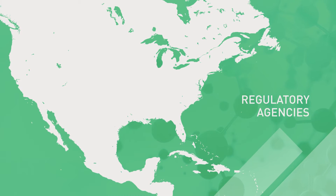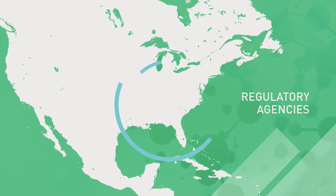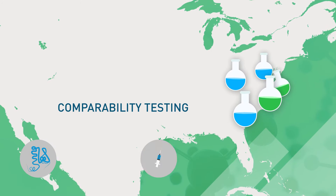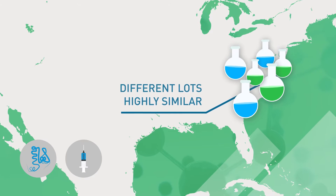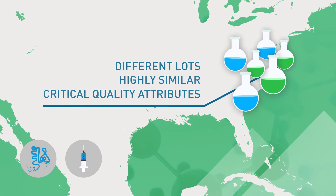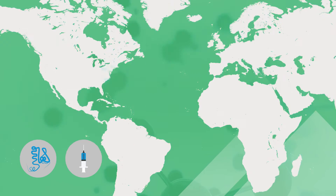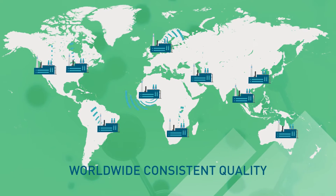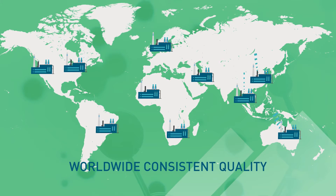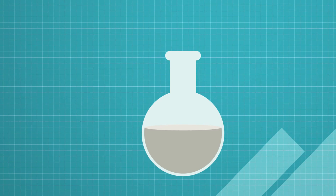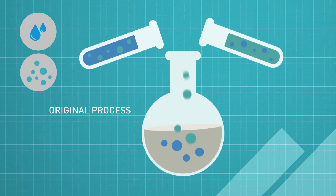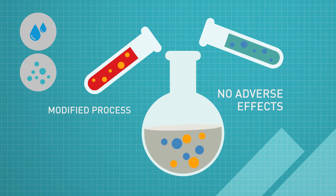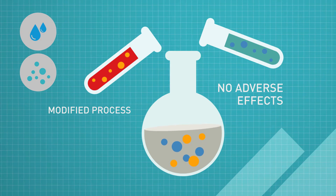Government regulatory agencies, which oversee the biopharmaceutical industry, recommend the drug product is tested for comparability during and after manufacturing, ensuring different lots are highly similar in critical quality attributes. To comply, manufacturing sites carry out comparability studies to ensure they're highly similar to each other and the reference protein. Sometimes manufacturing processes may need to be modified, and these changes mustn't be allowed to adversely affect the final drug product and its critical quality attributes, such as protein stability.